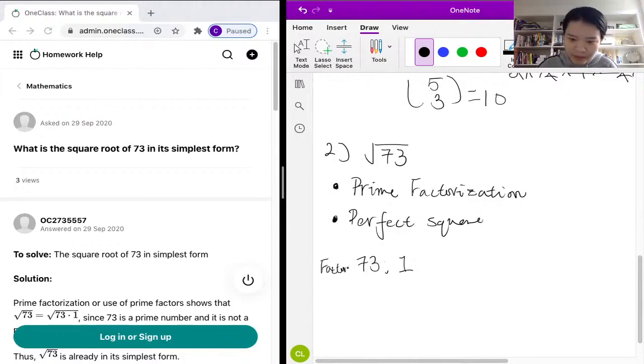So the number 73 - factors are 73 and one - so this number 73 is already in its simplest form and we can't simplify it any further. So the simplest form of the square root of 73 is just...